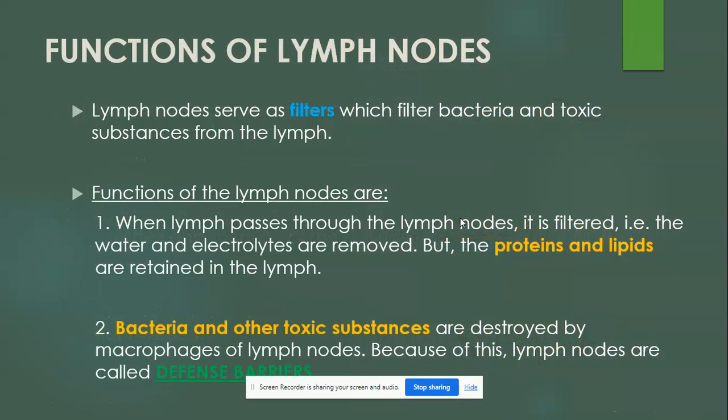The functions of lymph nodes: lymph nodes serve as filters that filter bacteria and toxic substances from the lymph. When lymph passes through lymph nodes, water and electrolytes are removed while proteins and lipids are retained. Bacteria and other toxic substances are destroyed by macrophages of the lymph nodes, which is why lymph nodes are called the defense barrier.